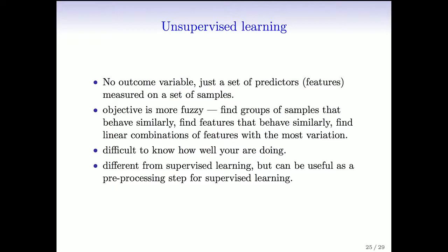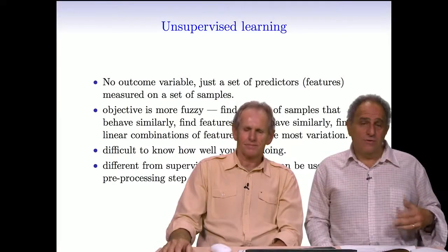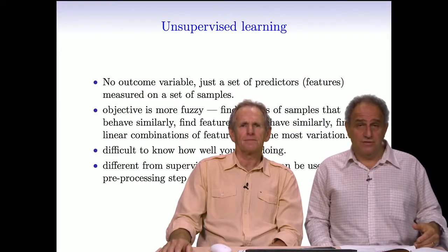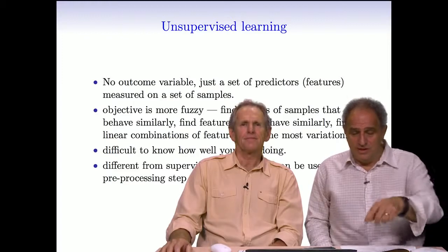One of the challenges is that it's hard to know how well you're doing — there's no gold standard, there's no y. So when you've done a clustering analysis, you don't really know how well you've done. Nonetheless, it's an extremely important area. One reason is that unsupervised learning is an important pre-processor for supervised learning — it's often useful to organize or choose features based on the X's themselves, and then use those processed features as input into supervised learning. Also, it's much more common to collect data that is unlabeled. On the web, for example, a computer algorithm can scan and grab movie reviews, but figuring out whether a review is positive or negative often takes human intervention. So it's much harder and costlier to label data than to collect unlabeled data.